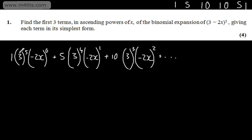We've got 1 multiplied by 3 to the power of 5. 3 to the power of 5 is going to give me 243. We've got (-2x) to the 0, which is just 1. I've got 5 multiplied by 3 to the power of 4. 3 to the power of 4 is going to give me 81. So we've got 5 times by 81.